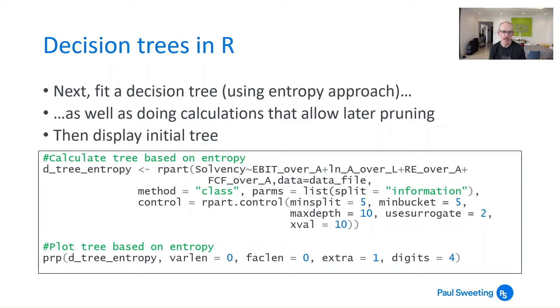And then PRP is what actually displays the tree. Varlen and faclen setting those equal to zero is essentially just determining how many characters are shown in the labels and that sets it to all of them. And extra equals one, there's a whole load of different choices and it's basically just what extra information do you get shown at each node in the decision tree. Then digits equal four is how many significant figures your numbers get shown as.